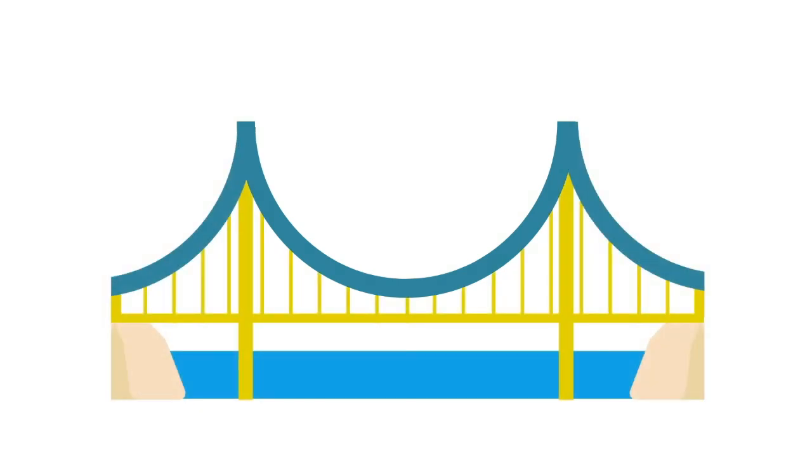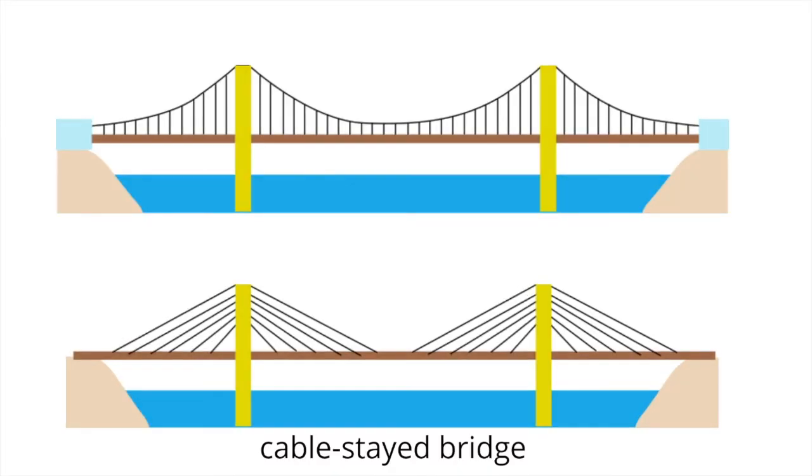Suspension bridges consist of towers or pylons connected with steel cables suspending the structure. Variations of this type of bridge include cable-stayed bridges and suspended deck bridges. Suspension bridges are usually built from steel.